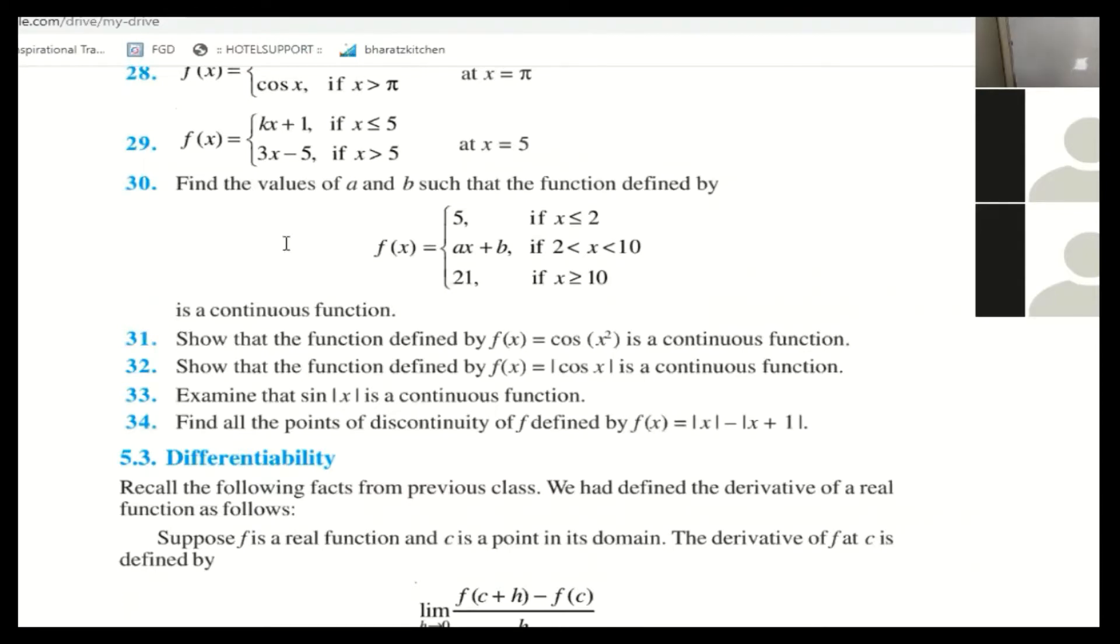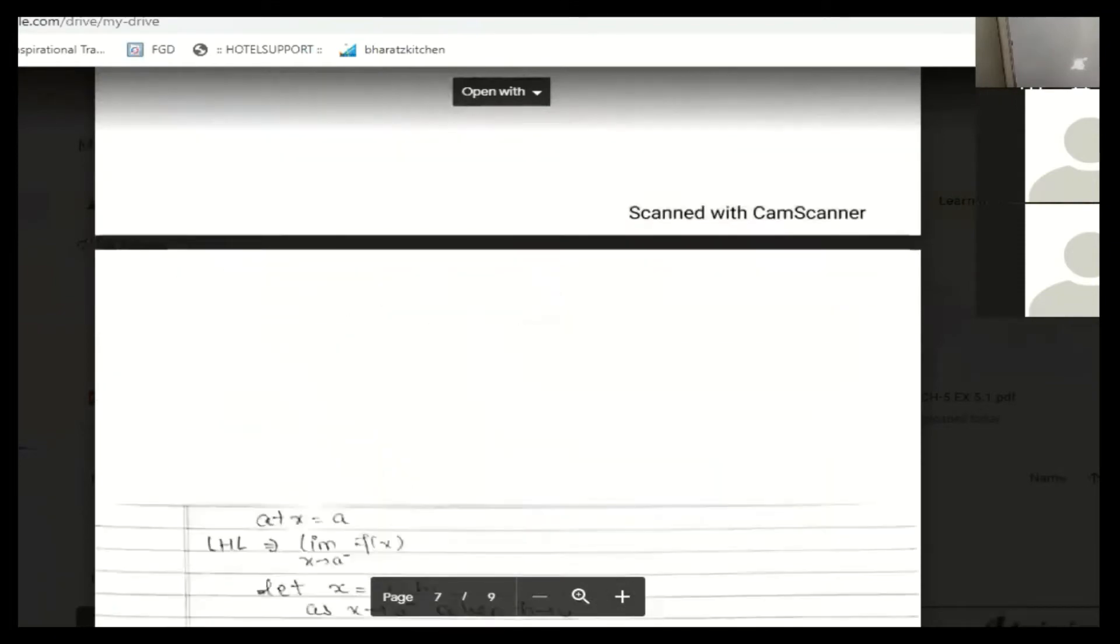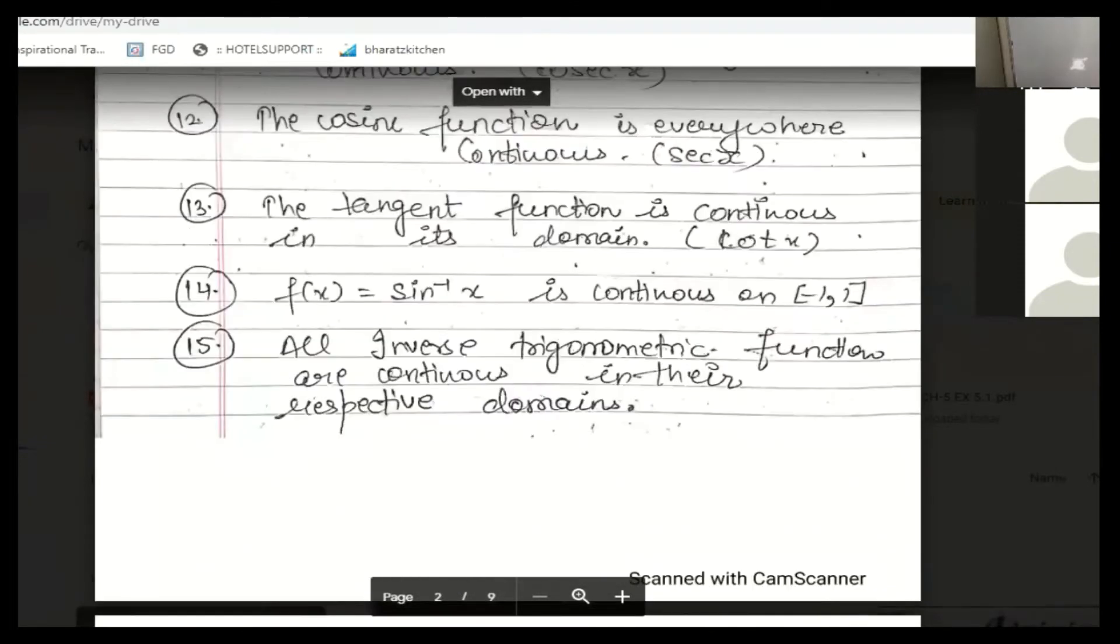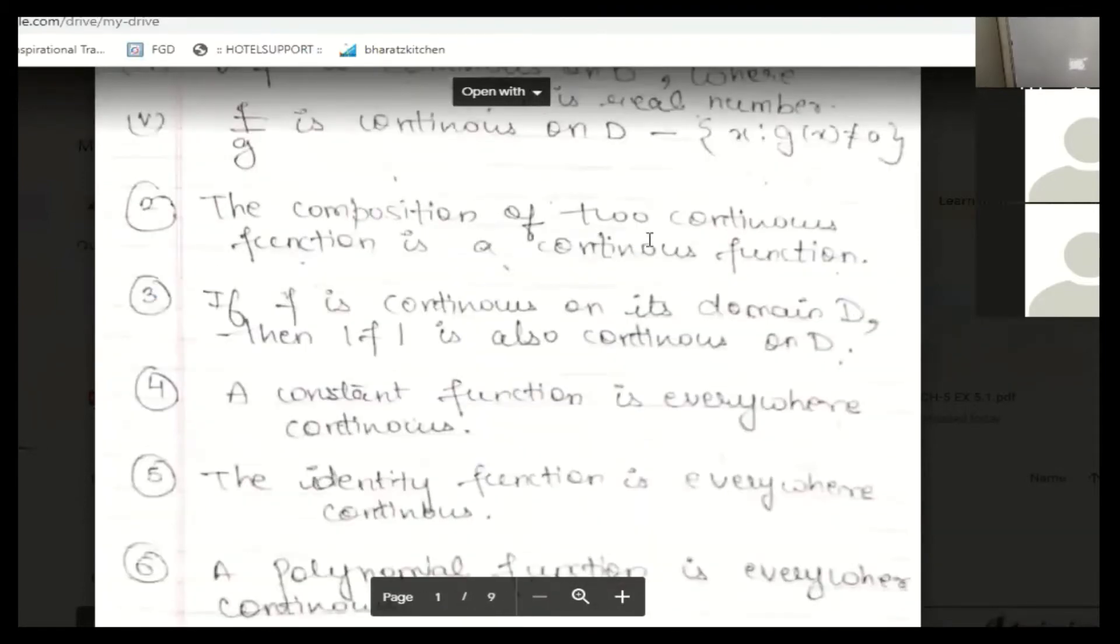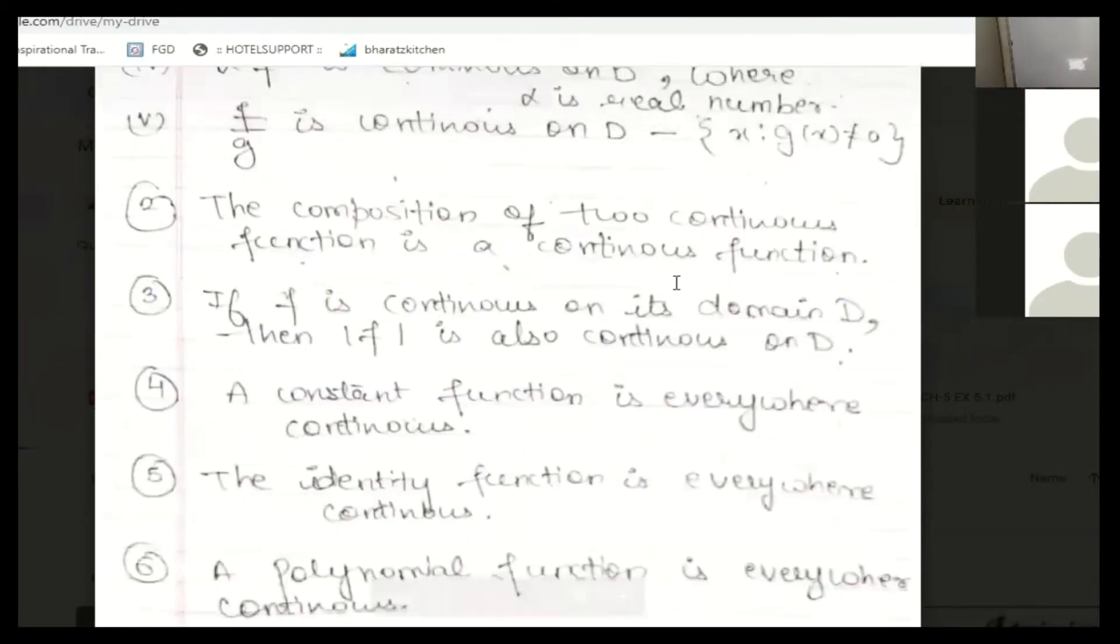You know, I have told you a property. Composition of two functions. If two functions are continuous, then their composition is continuous. This property is the second property. The composition of two continuous functions is a continuous function.